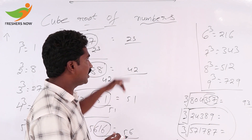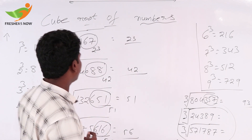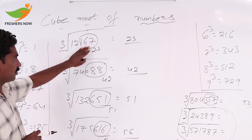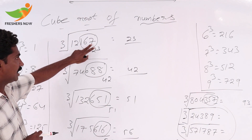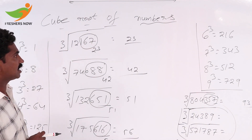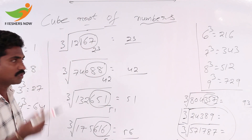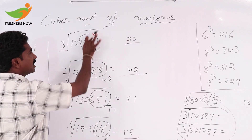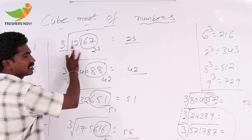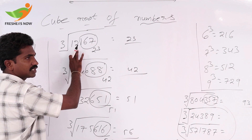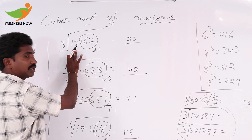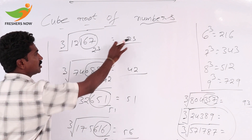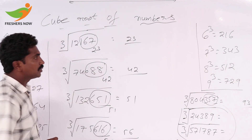We are solving cube roots very easily. Why does this technique work? First, we find the units place value — 7 is there, 3 cube is 27, so we write 3. Later, keep 3rds away: 12 is there, 4 is there, 3 cube 27, 2 cube 8, so we take 2. That value is 23.